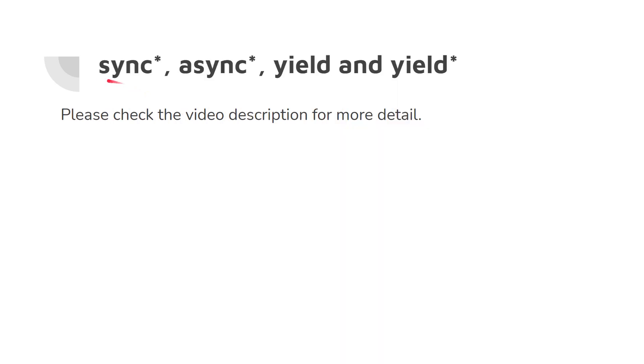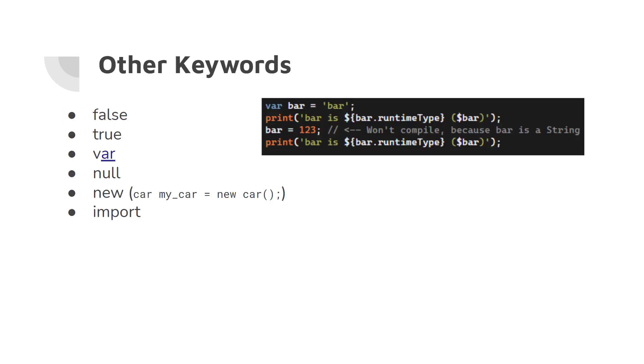When you assign e1's employee name and salary and print details, the department is MIS for both employee one and employee two because it is static — shared across instances. We also have keywords sync*, async*, yield, and yield* — for these you can refer to the video description, where there is a source that explains them in detail. Same for typedef — there is a source in the video description.